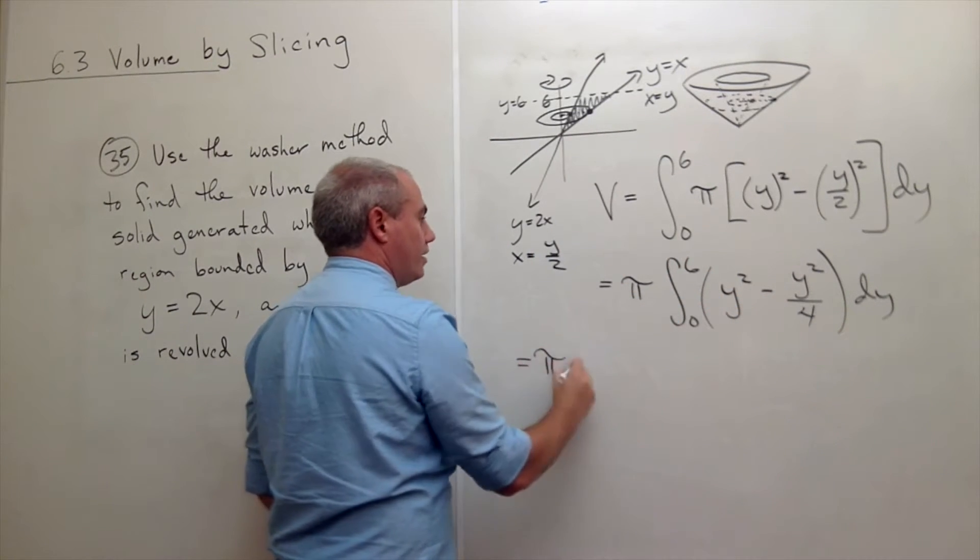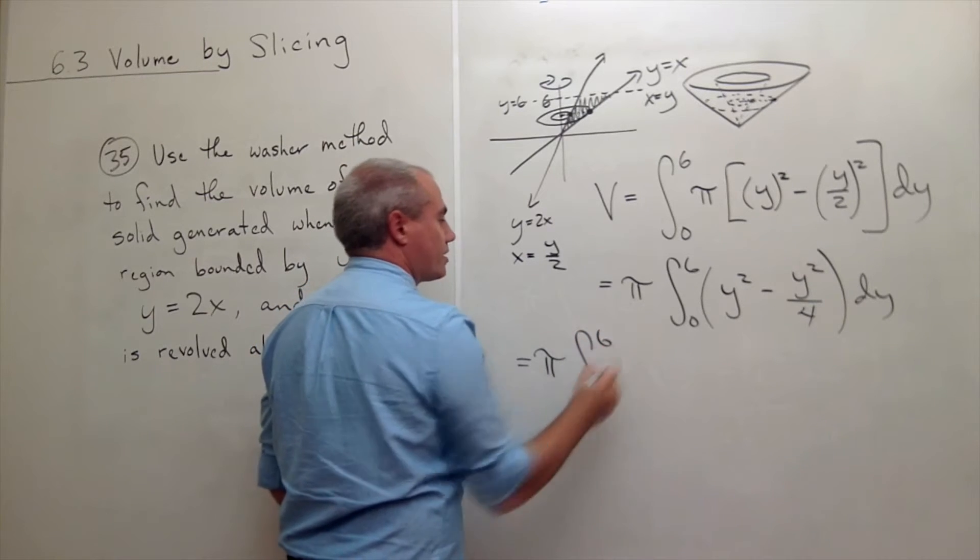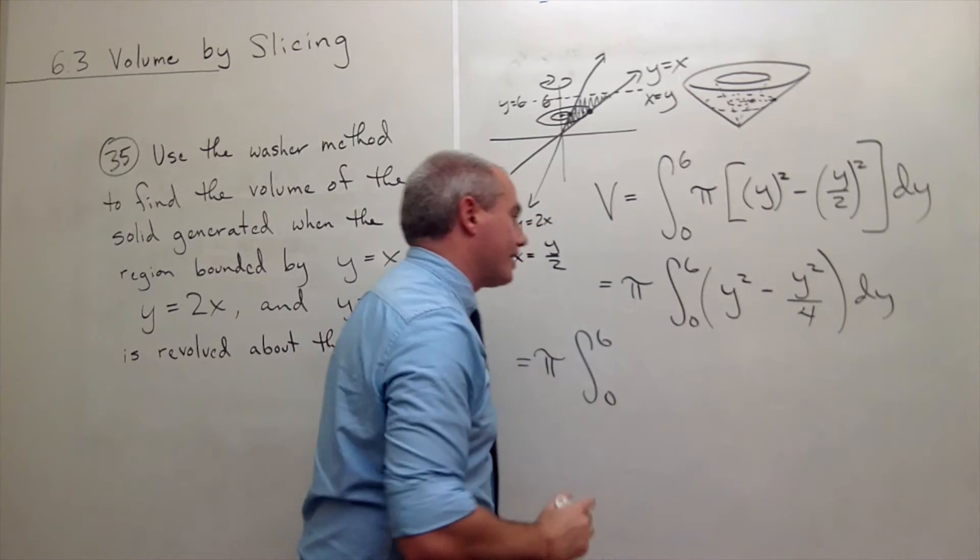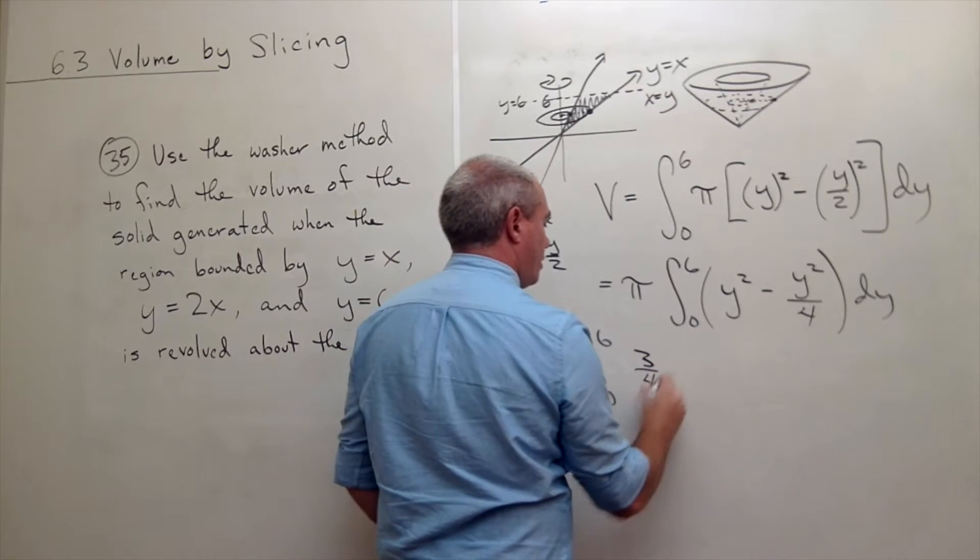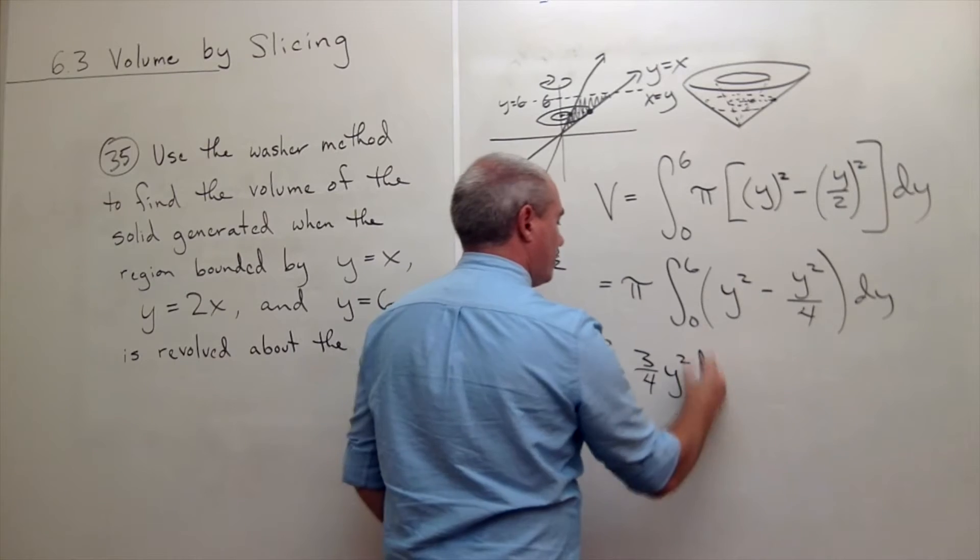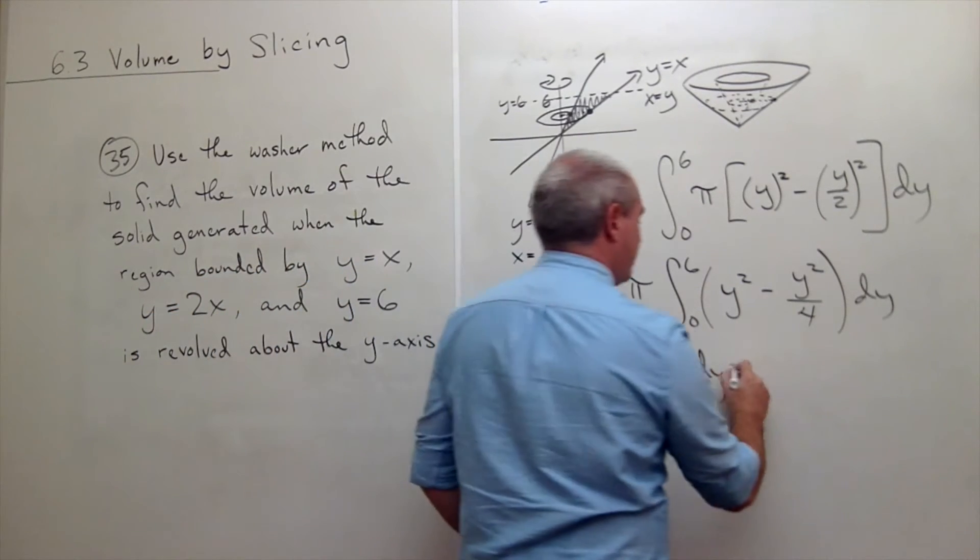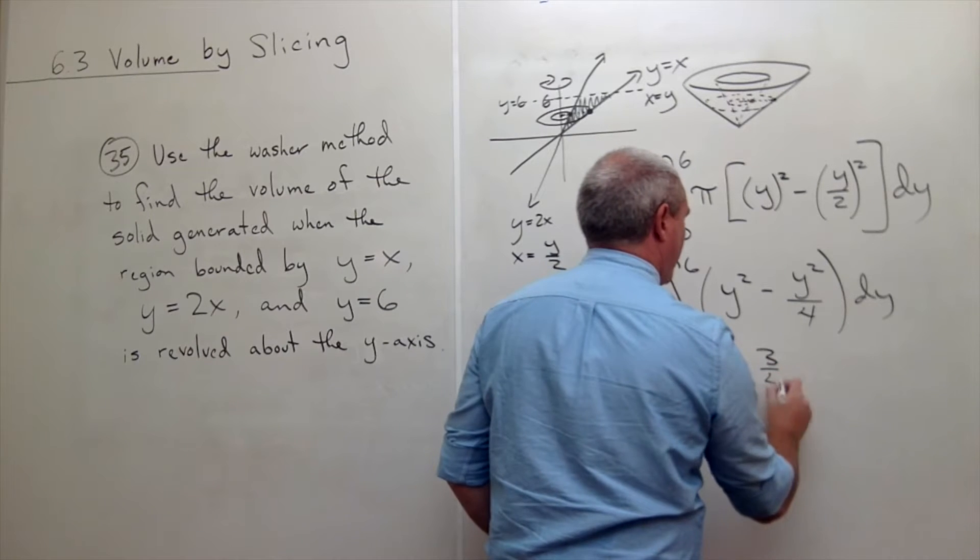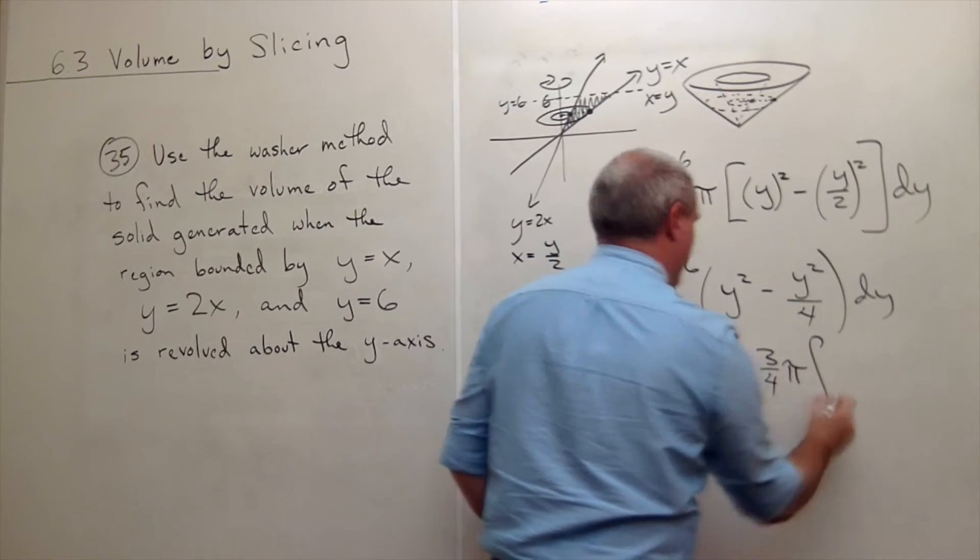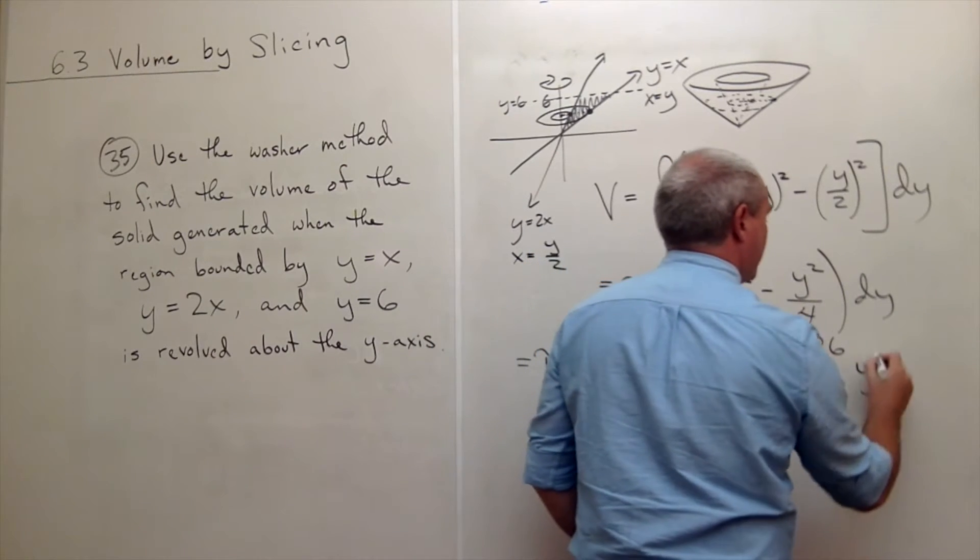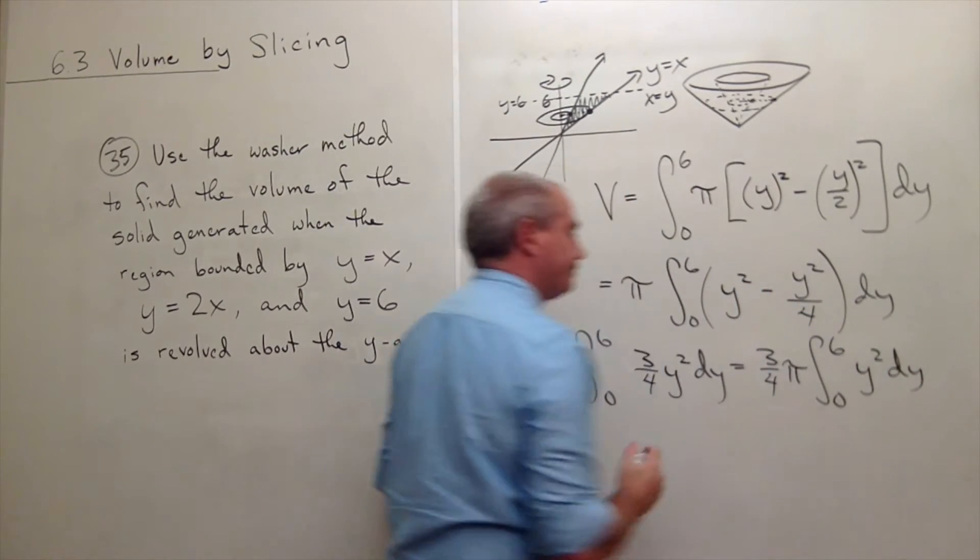I could rewrite that. That's pi times the integral from 0 to 6 of, y squared minus a fourth of a y squared is 3 fourths of a y squared dy. If I wanted to, I could pull the 3 fourths out. So just write this as 3 fourths pi times the integral from 0 to 6 of, y squared dy.